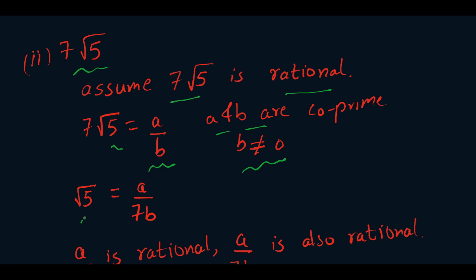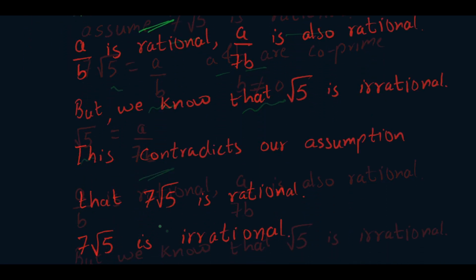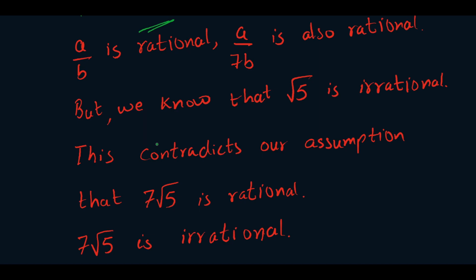So we can write root 5 as a by 7b. Since a by b is a rational number, a by 7b is also rational. But we know that root 5 is an irrational number. So this contradicts our assumption that 7 root 5 is a rational number. Hence, 7 root 5 is irrational.